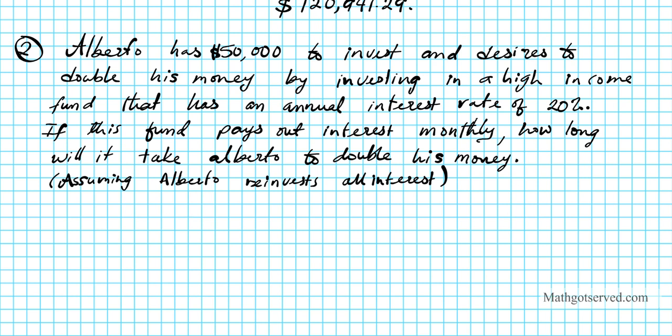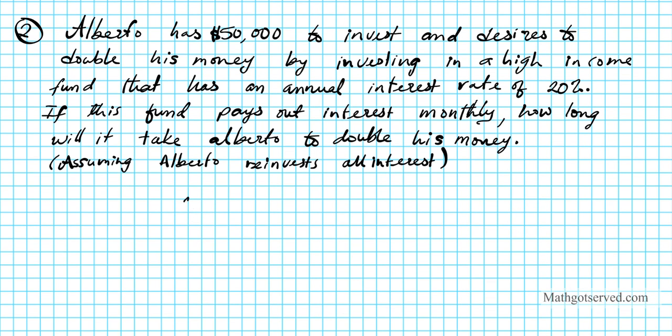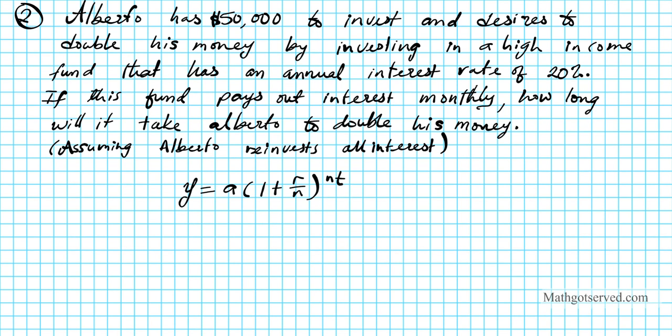So with that in mind, let's take a look at the formula. We're going to use the same formula, y equals a times 1 plus r over n, raised to the nt. Let's see what we know. The starting amount is $50,000. The final amount, he wants to double his money, is 2 times $50,000. Doubling is basically multiplying by 2. So $100,000 is his final amount.